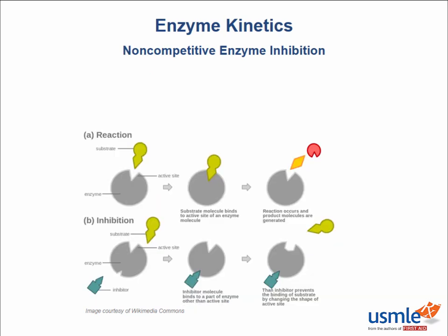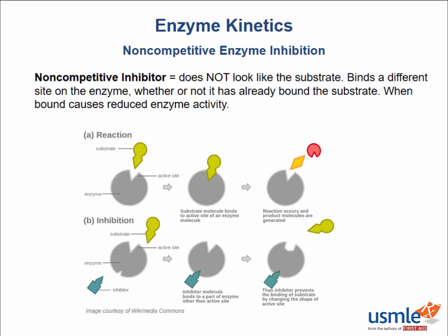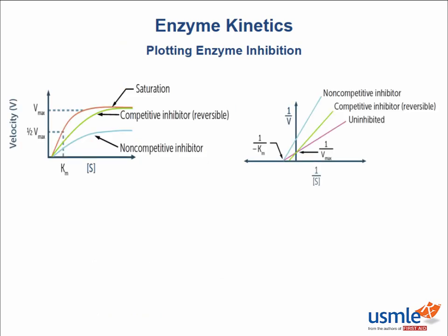And what about a non-competitive enzyme inhibitor? A non-competitive inhibitor does not look like the substrate and therefore does not compete for the enzyme's active site. Instead, it binds a different site on the enzyme altogether — whether or not the substrate is already bound. This site is called a regulatory site, and when bound, it causes reduced enzyme activity. Now let's see how competitive and non-competitive inhibitors would be plotted on our Michaelis-Menten and Lineweaver-Burk plots.